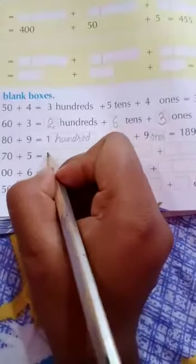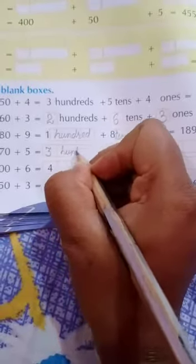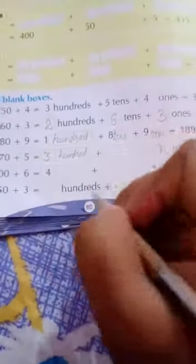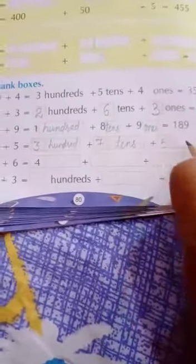300 plus 70 plus 5 is equal to. Thiri kya hua humara? Hundred. Three hundred seven tens. Tens. And 5 ones.